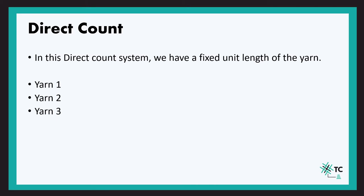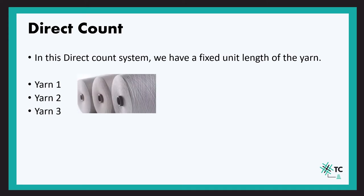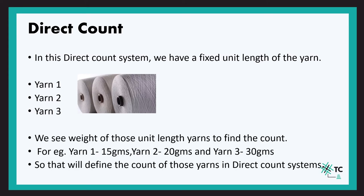Let us take an example to understand this. If there are three yarns — yarn 1, yarn 2, and yarn 3 — and you have to compare their fineness, all three yarns have the same length of 1000 meters, but their weights vary: yarn 1 is 15 grams, yarn 2 is 20 grams, and yarn 3 is 30 grams.